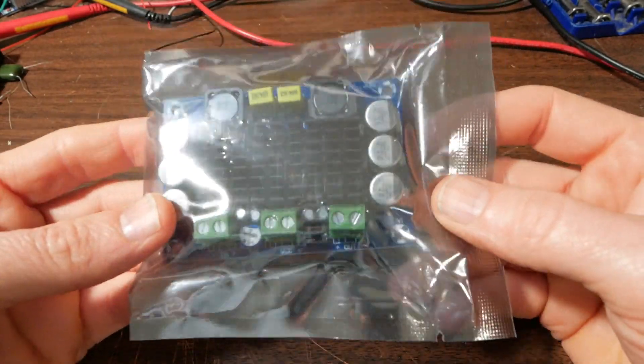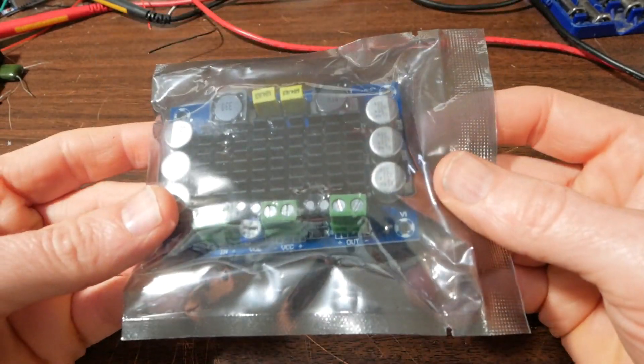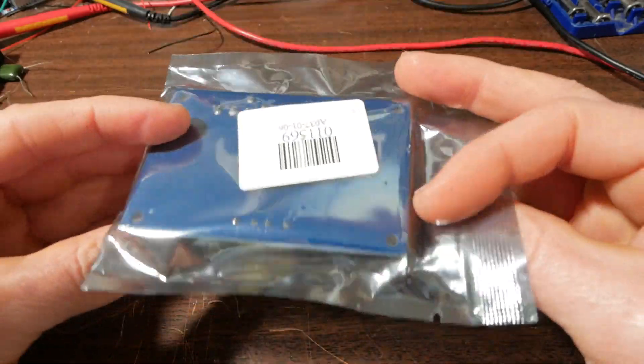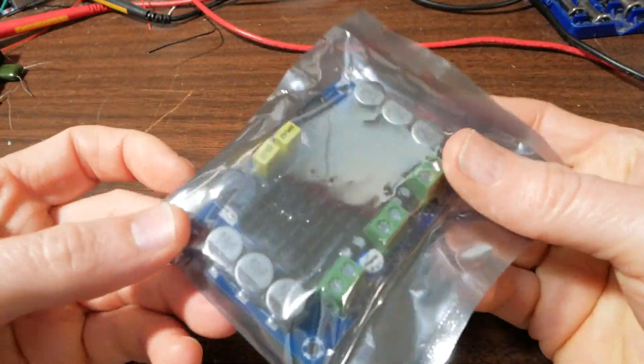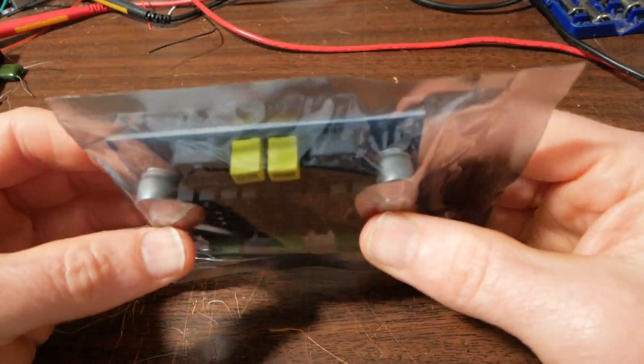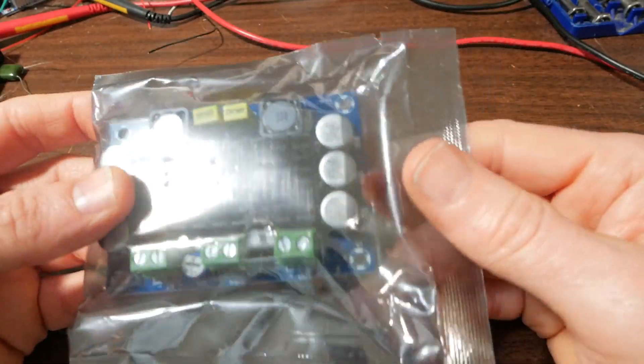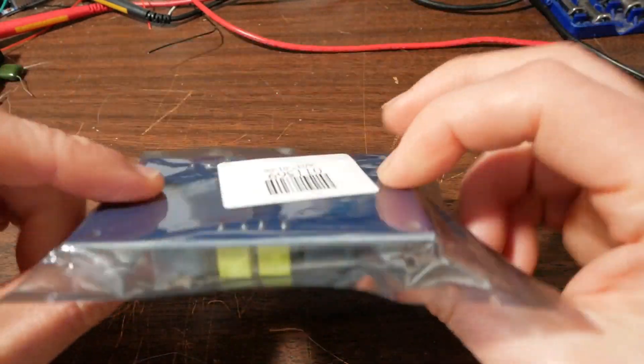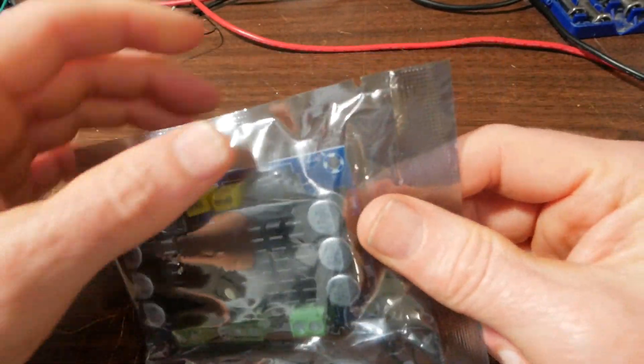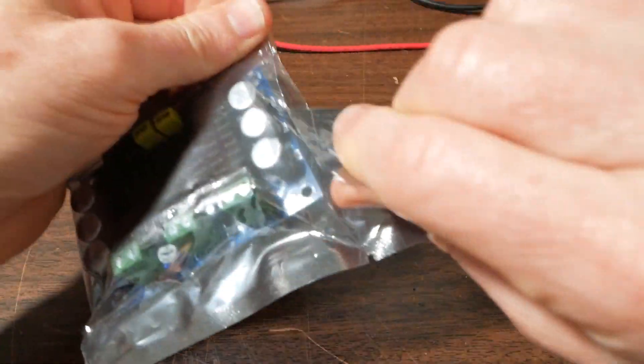I bought it off of eBay, you get them in the six or seven dollar range. The other TPA 3116 amps were pretty good. One required modification to make it good, but let's see how this thing is.